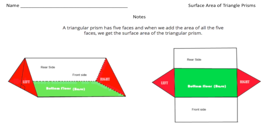Hey everybody, Dr. Nelson here. This is a video about how to find the surface area of triangular prisms. You're going to take notes with me for the first two pages, and then you have a chance to try a problem on your own, and at the end you can see how you did. So how do you find the surface area of a triangular prism? To get a better understanding, you need to look at the net of a triangular prism.